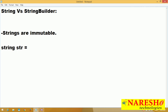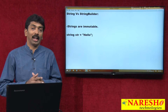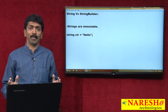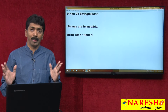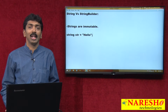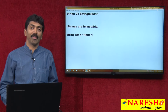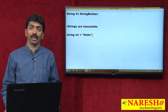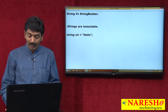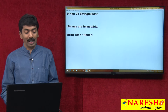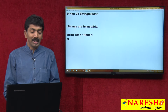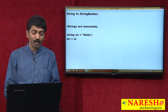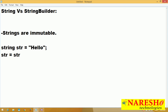String str equals "hello" — I am declaring a string. Once you declare a string, some memory is going to be allocated for you on the heap memory and 5 bytes of memory is allocated for you on the heap. In the next line, I am trying to say str equals str plus "world".